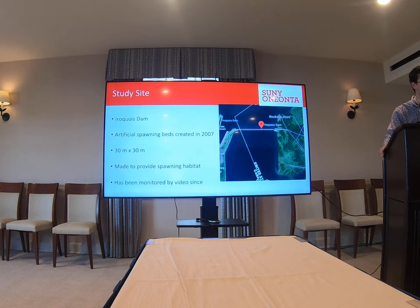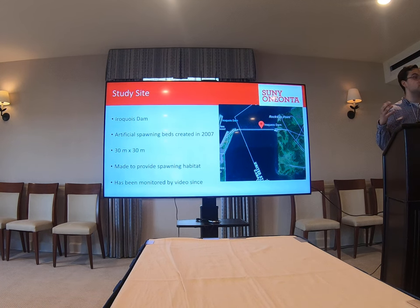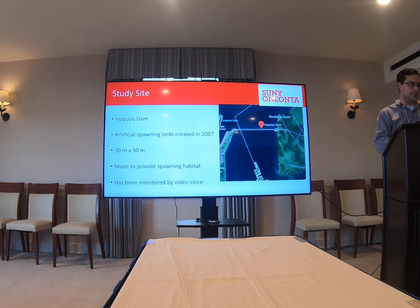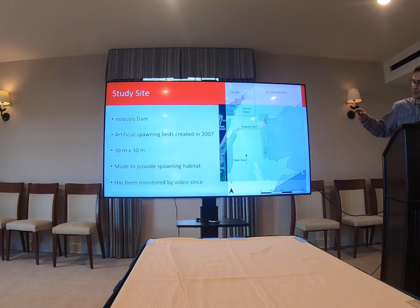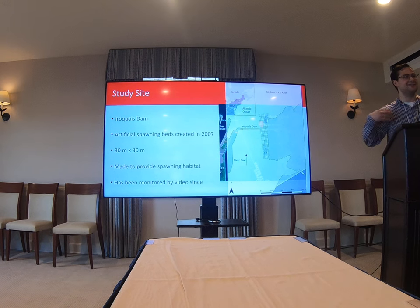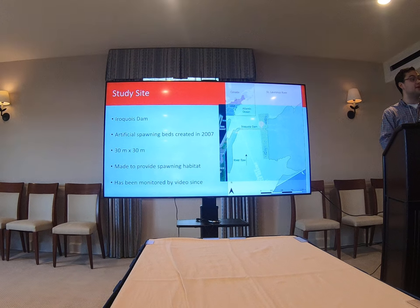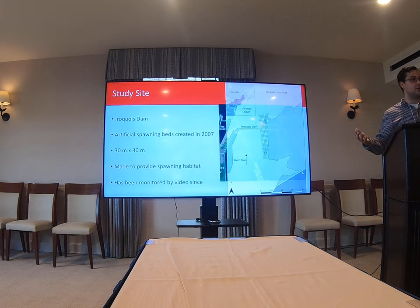That brings us to our study site. We focused on the lake sturgeon population around the Iroquois Dam. In 2007, the New York Power Authority created artificial spawning beds for the sturgeon to spawn on, giving them habitat. Each bed was about 30 meters by 30 meters. Something interesting to note: the St. Lawrence River flows from south to north, so our upstream bed is actually to the south and the downstream bed is to the north — important to note for later on. After 2007, in 2008, monitoring of the sturgeon beds began. But it was in 2011 that the project was handed over to DEC, and that's who we received our dataset from, so the data we work with starts from 2011.